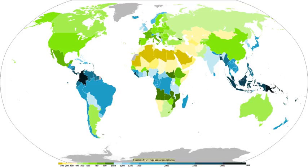Stratiform or dynamic precipitation occurs as a consequence of slow ascent of air in synoptic systems on the order of centimeters per second, such as over surface cold fronts and over and ahead of warm fronts. Similar ascent is seen around tropical cyclones outside of the eyewall, and in comma head precipitation patterns around mid-latitude cyclones. A wide variety of weather can be found along an occluded front, with thunderstorms possible, but usually their passage is associated with a drying of the air mass. Occluded fronts usually form around mature low-pressure areas.